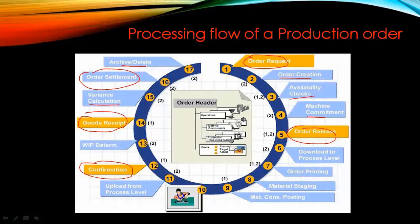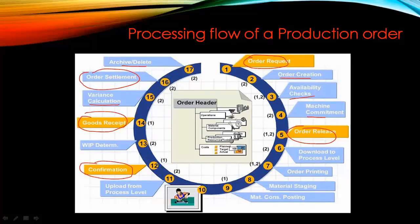Archiving and deleting is a separate process — just ignore that step for now. It's done after many years just to clean up the system. A company will rarely delete data, but might do so after 15 or 20 years. For example, orders created 20 years ago that they no longer want to see — in that case, after many years they might delete them. That's how it works.